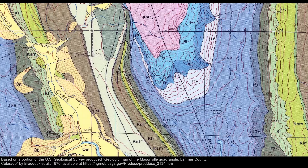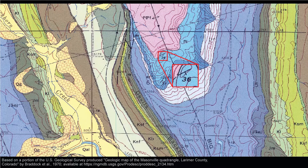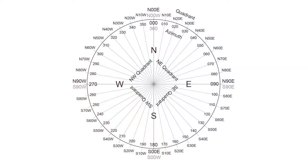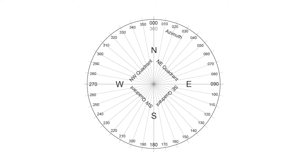In this video, I'm going to show you how to plot strike and dip symbols and trend and plunge symbols on geologic maps. In order to plot these symbols, you have to be very familiar with the compass wheel. In another video, I fully cover the compass wheel and how to convert between quadrant and azimuth. In this video, I'm just going to focus on azimuth convention for determining compass direction.